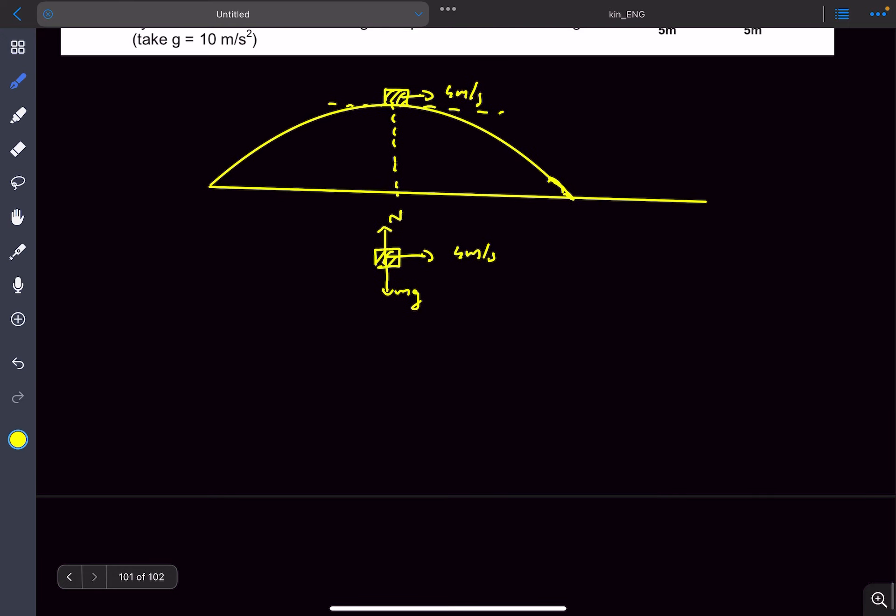Now if we write F equals ma equation, we can say the net force towards the center will be equal to the centripetal acceleration which would be m v squared divided by the radius of curvature at that point.